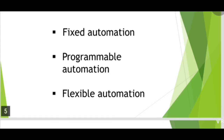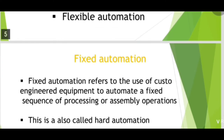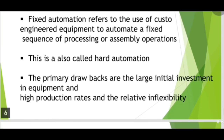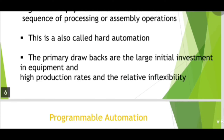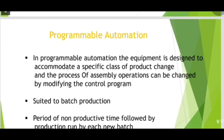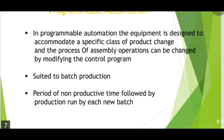Hello friends, I am Tanuja Pagar. I am explaining types of automation. First, fixed automation. Fixed automation refers to the use of custom engineering equipment to automate a fixed sequence of processing or assembly operations. This is also called hard automation. The primary drawbacks are the large initial investment in equipment, high production rates, and relative inflexibility.